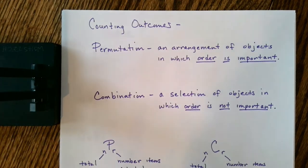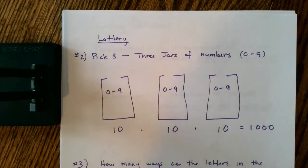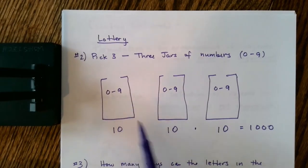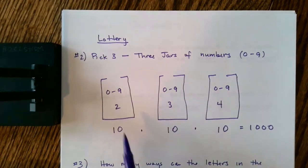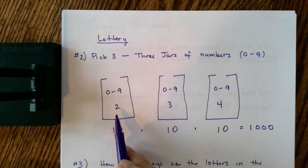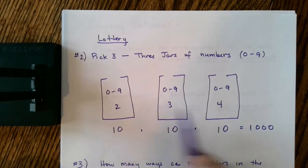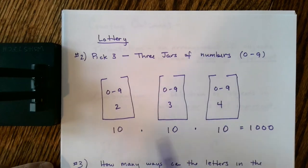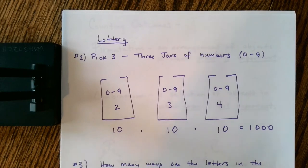Let's go back to what we were talking about in our first video when we talked about the pick-three — I use this as an example because it's something that's in our society. If you pick the number 2-3-4, the chances of getting the two in the first jar, the three in the second, and the four in the third, in that particular order, are much smaller than if you don't care about the order. If 3-4-2 or 4-3-2 came up, your chances would be increased.